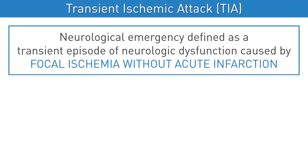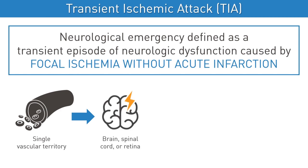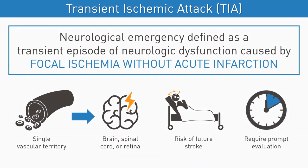TIAs are a neurological emergency defined as a transient episode of neurologic dysfunction caused by focal ischemia without acute infarction. Symptoms often localize to a single vascular territory of the brain, spinal cord, or the retina. TIAs can carry a significant risk of future stroke, and thus they require prompt evaluation to identify and modify risk factors.